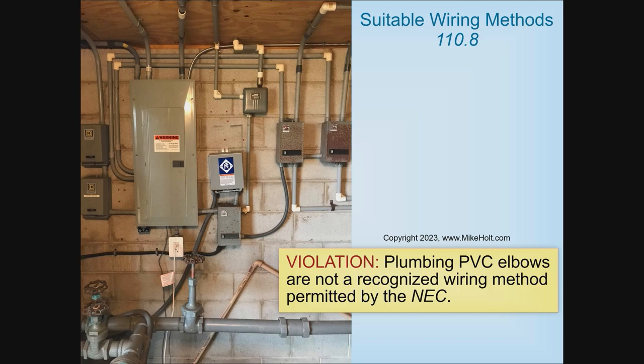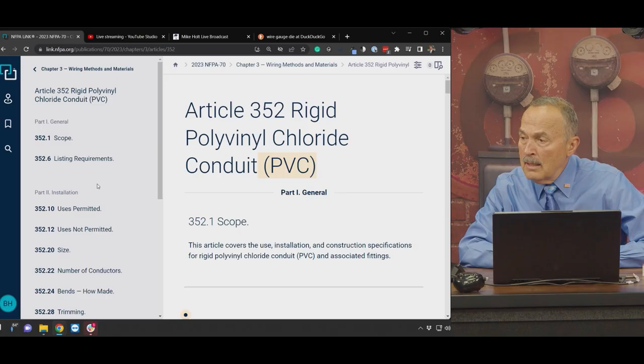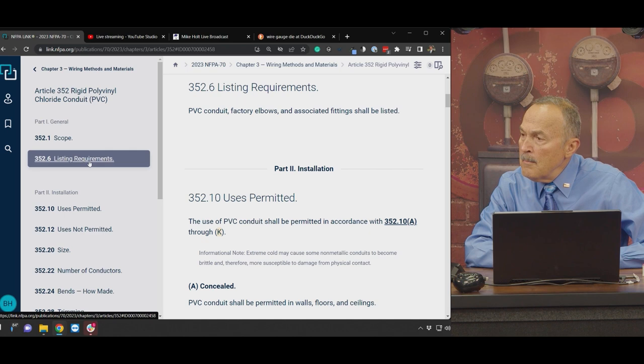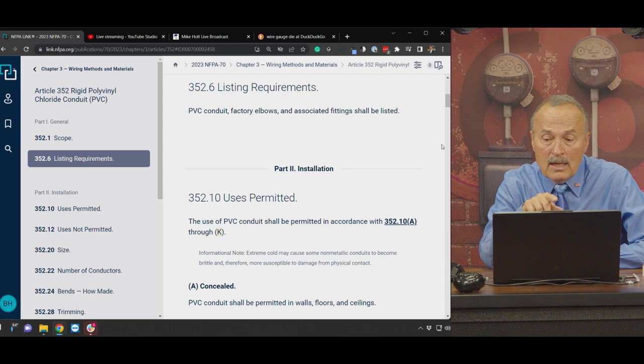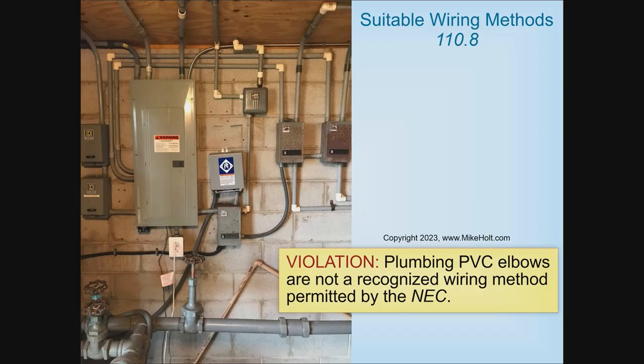Let's go to the wiring method contained in the code for PVC — Article 352. Let's look at 352.6, which talks about PVC conduit, factory elbows, and associated fittings shall be listed. We can make this a 110.8 code violation, and we would also say that it violates 352.6 — these fittings are not listed for that particular application. And one more violation: 300.15. What is 300.15? Fittings must be designed for the specific raceway. We could also use 110.12 and say that's a sorry job for execution at work — it's not professional or skillful.